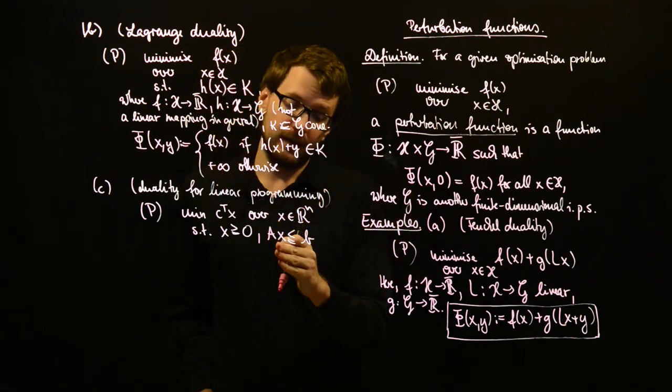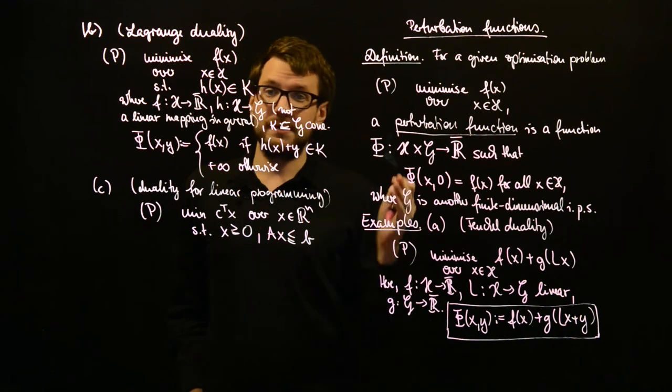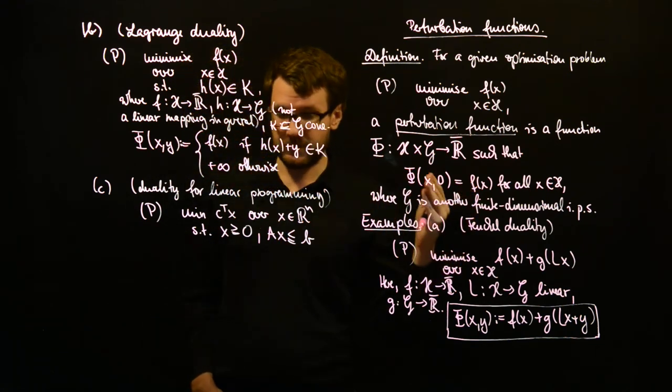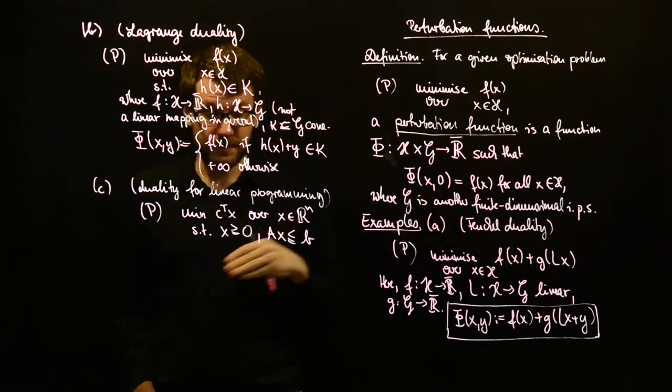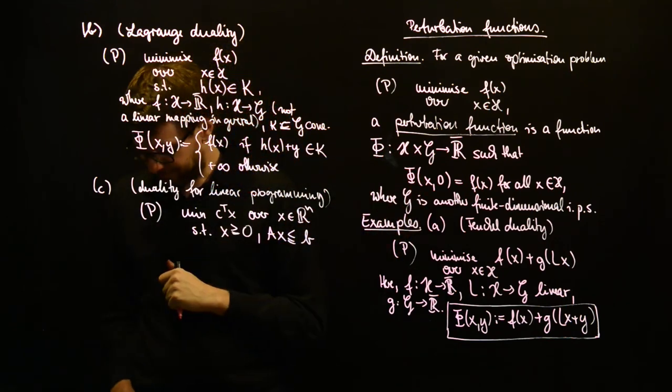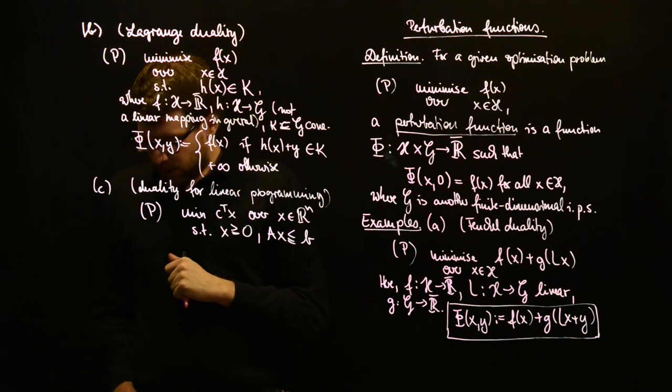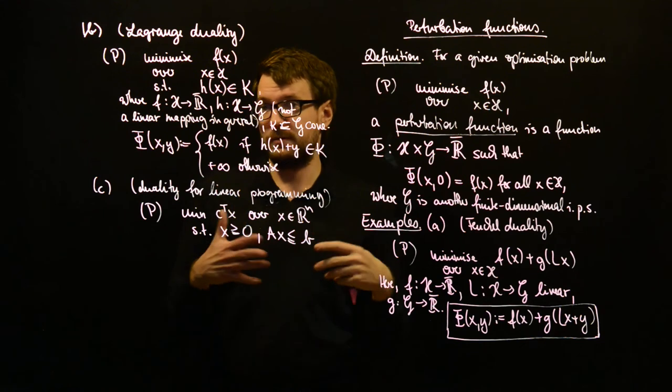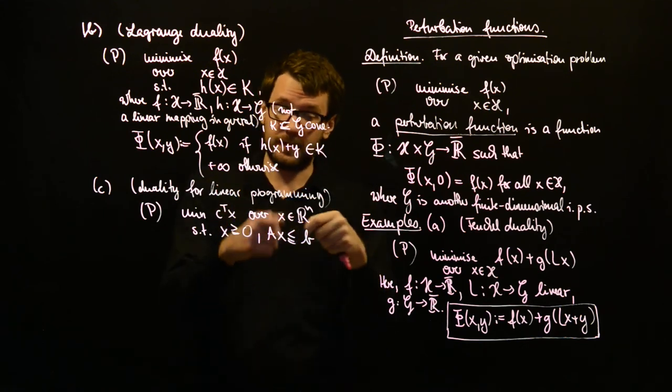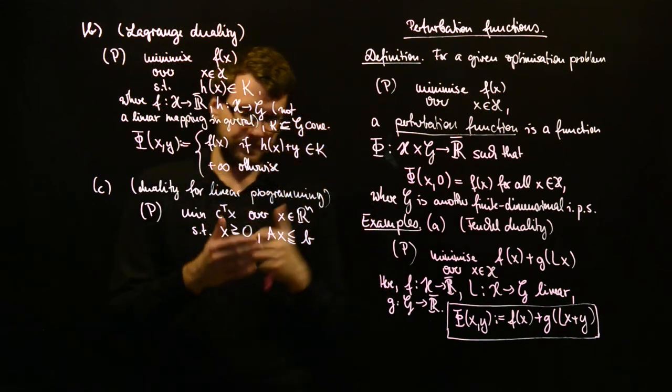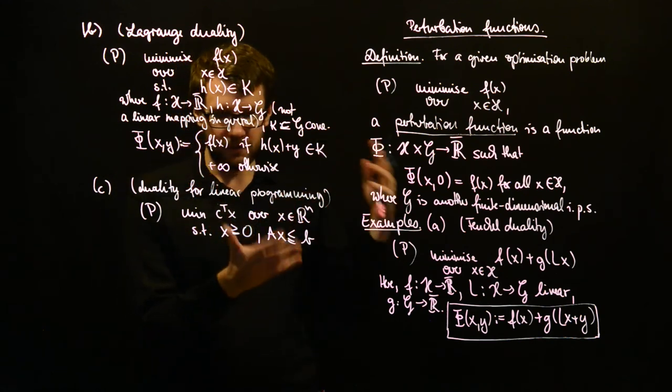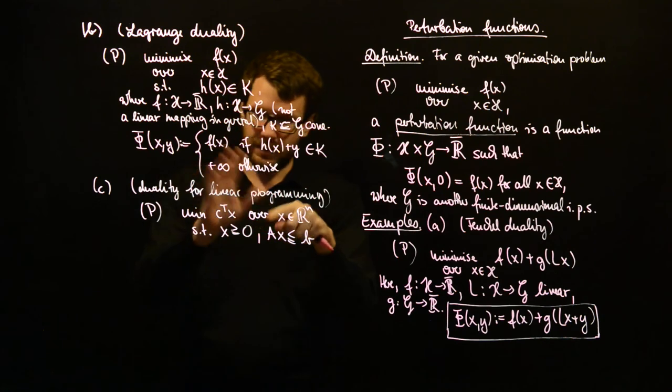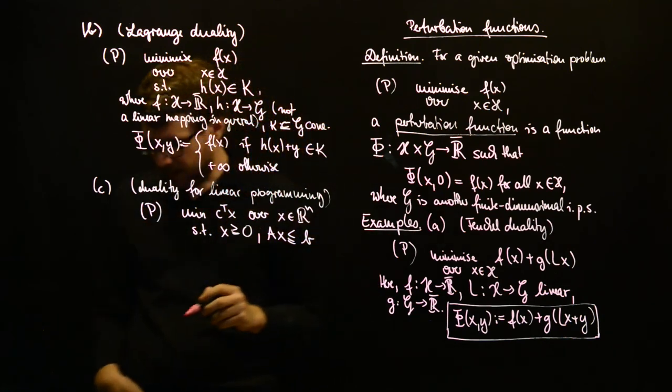So, it's in the cone of non-negative vectors, if you want. And Ax should be component-wise less or equal than b. So, Ax minus b is entry-wise, component-wise, or is a vector with non-positive entries, with less or equal than zero entries. This is one way to formulate a linear program. And you can obviously find equivalent standard formulations. But this one is a good one.